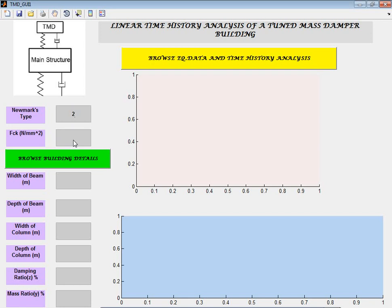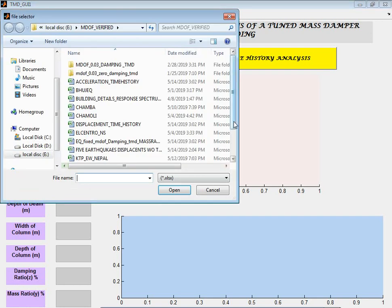You can browse your building details. The building details include the height, floor area of particular story, number of columns, and length of the beams. Let's browse - I have already written an Excel file.